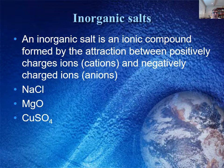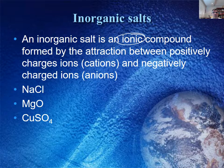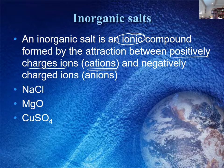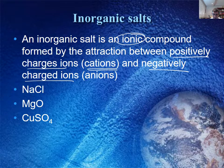Inorganic salts are compounds that have been formed between two different ions, two different charges. Ionic compounds are formed when two oppositely charged particles attract one another. These are positively charged particles called cations, and negatively charged ions which are called anions. The ion is emphasised in each of these two words — so cations and anions.